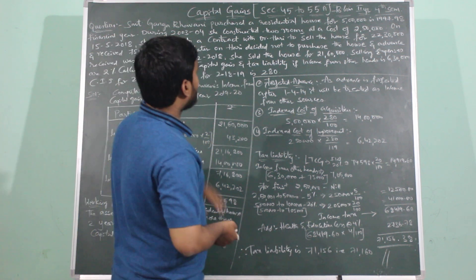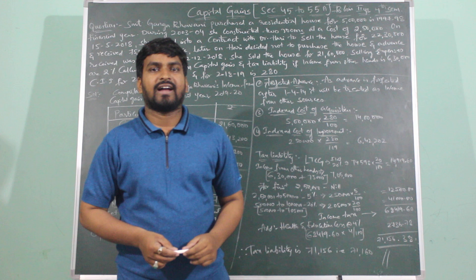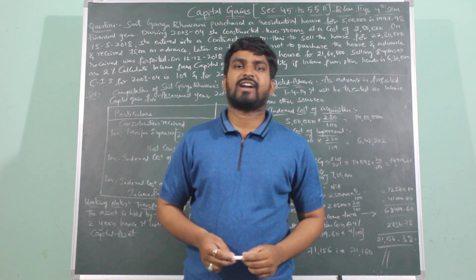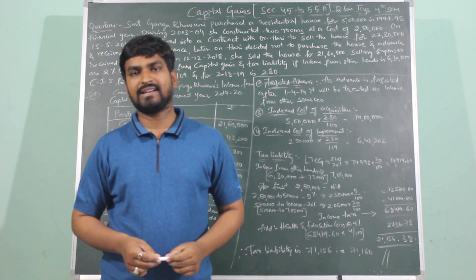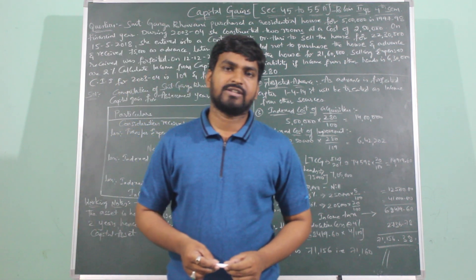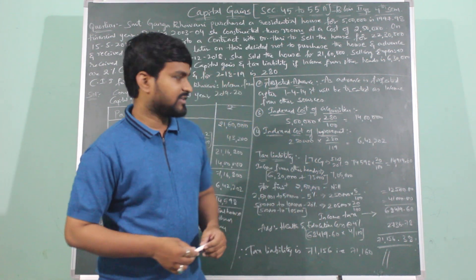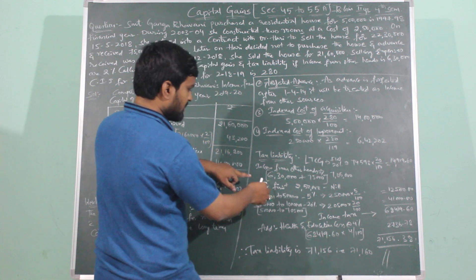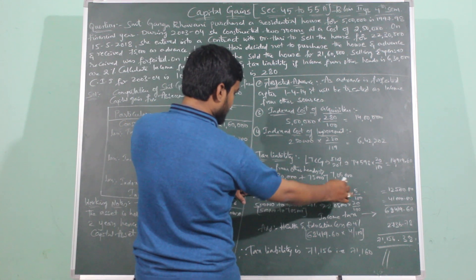Srimati Ganga Bhavani's age has not been specified in the question. As the age of the assessee has not been specified, she will be considered as a non-senior citizen whose age is less than 60 years. For a non-senior citizen, the basic exemption limit is Rs. 2,50,000, which will be deducted from income from other sources. So for the first Rs. 2,50,000, her tax liability will be nil.